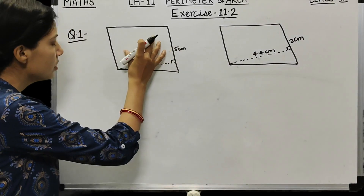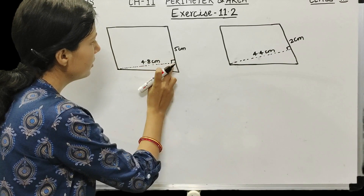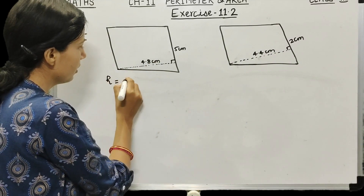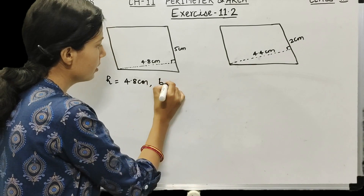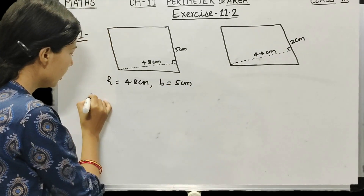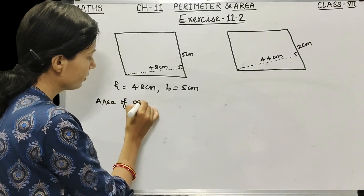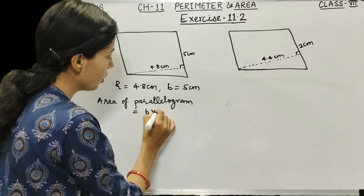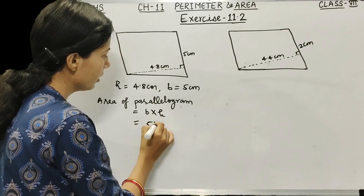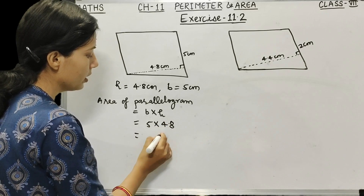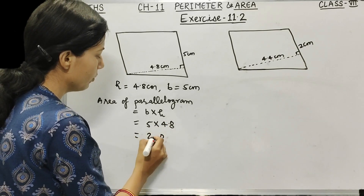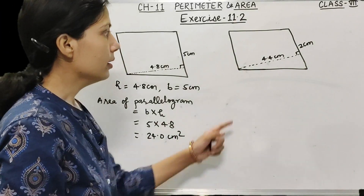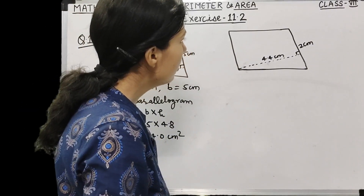For the fourth parallelogram, height is 4.8 cm and the corresponding base is 5 cm. Area = base × height = 5 × 4.8. That gives 5 × 8 = 40 and 5 × 4 = 20, so 24.0 cm² is the area of this parallelogram.